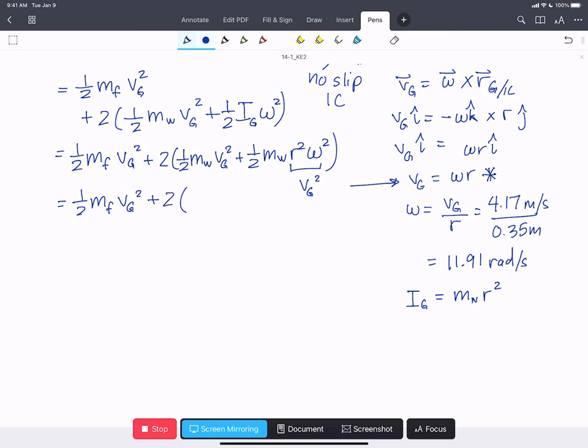and now we've got a 1 half mass of the wheel, VG squared, and a 1 half mass of the wheel, VG squared. That's going to be mass of the wheel, VG squared times 1.